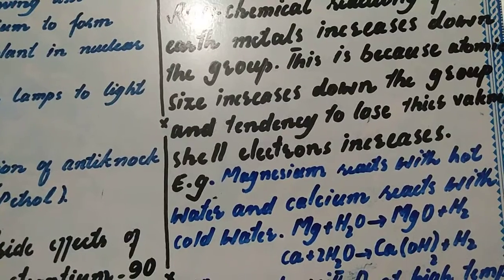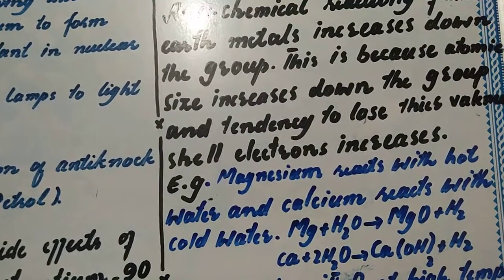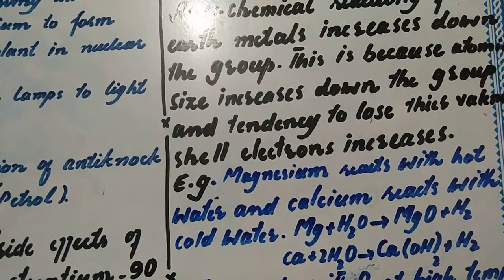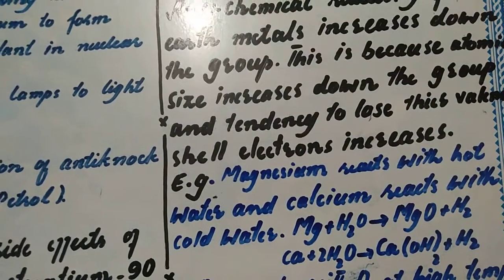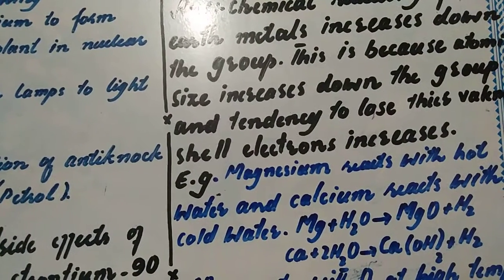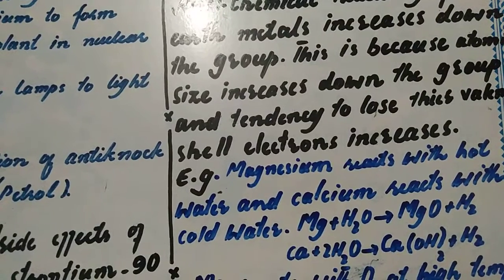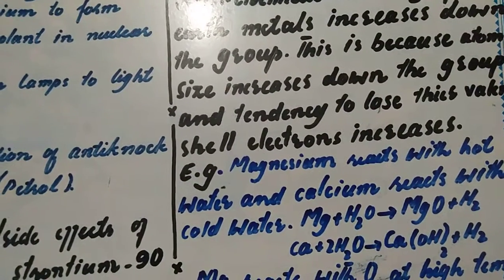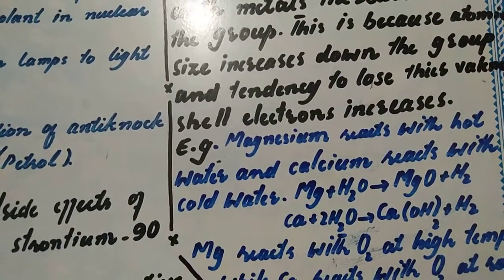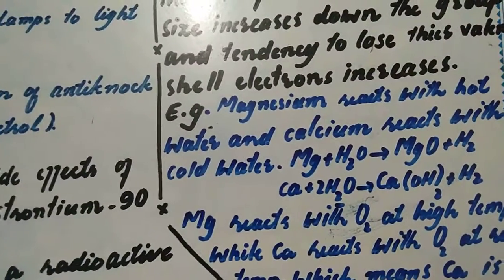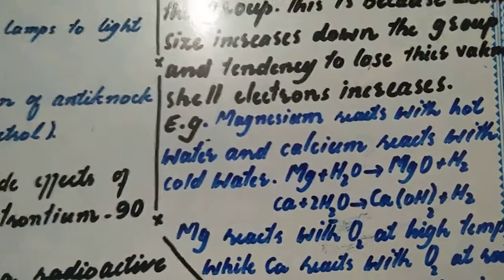This is because atomic size increases down the group and tendency to lose their valence shell electrons increases. When atom's size increases, their reactivity increases significantly. For bigger size atoms, it is easier to lose their outermost electrons.